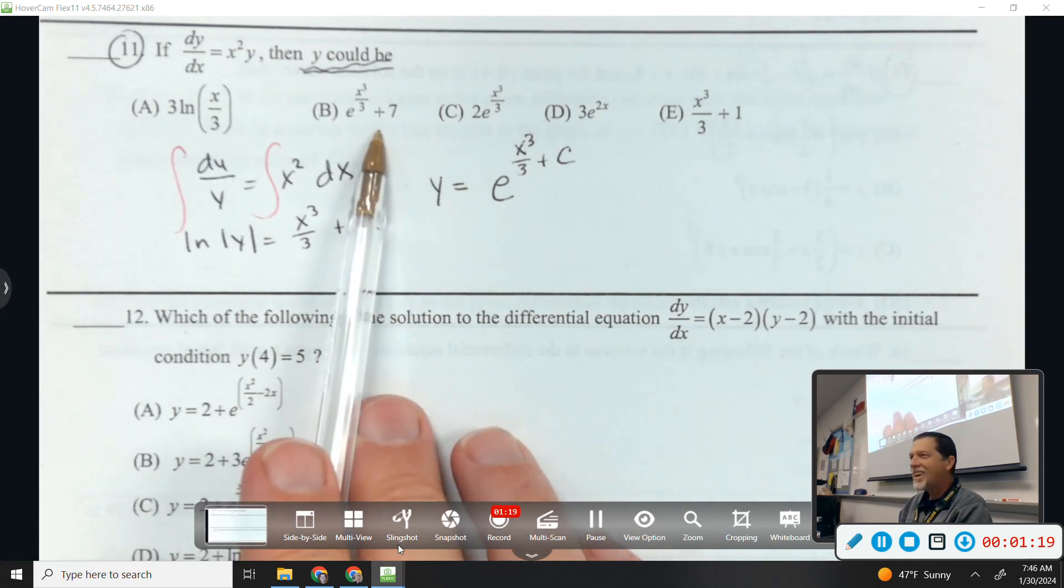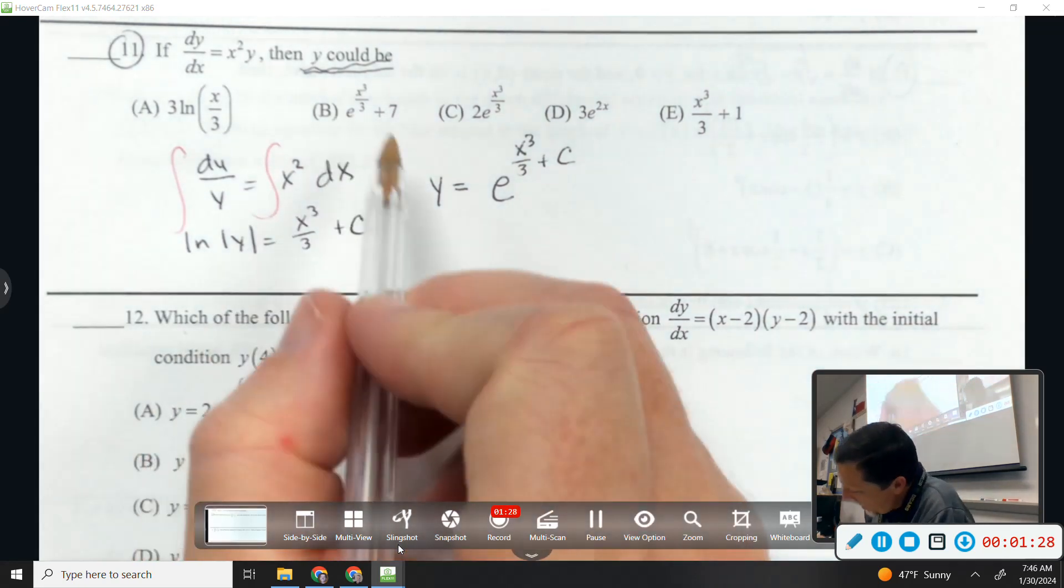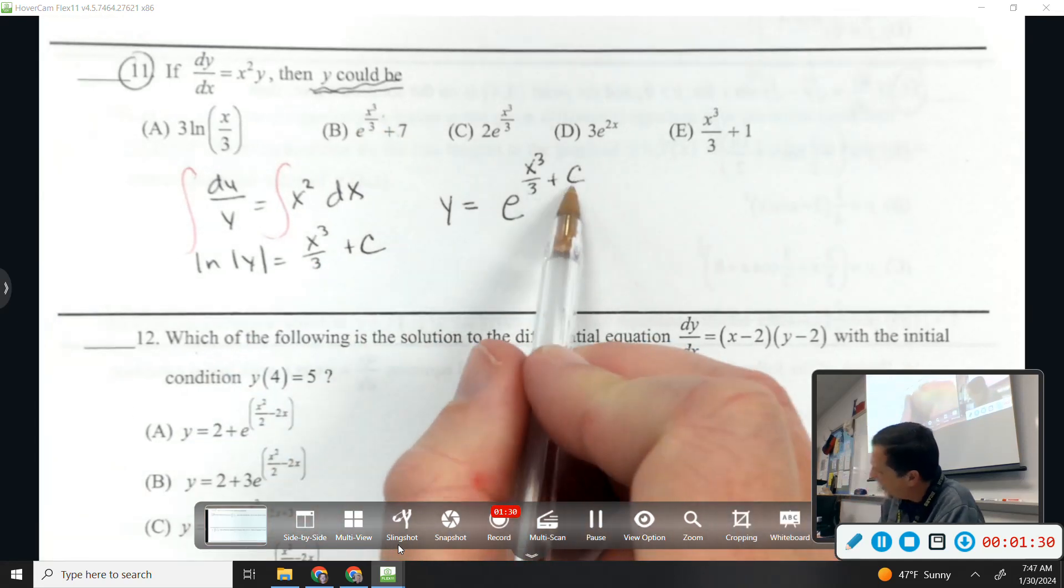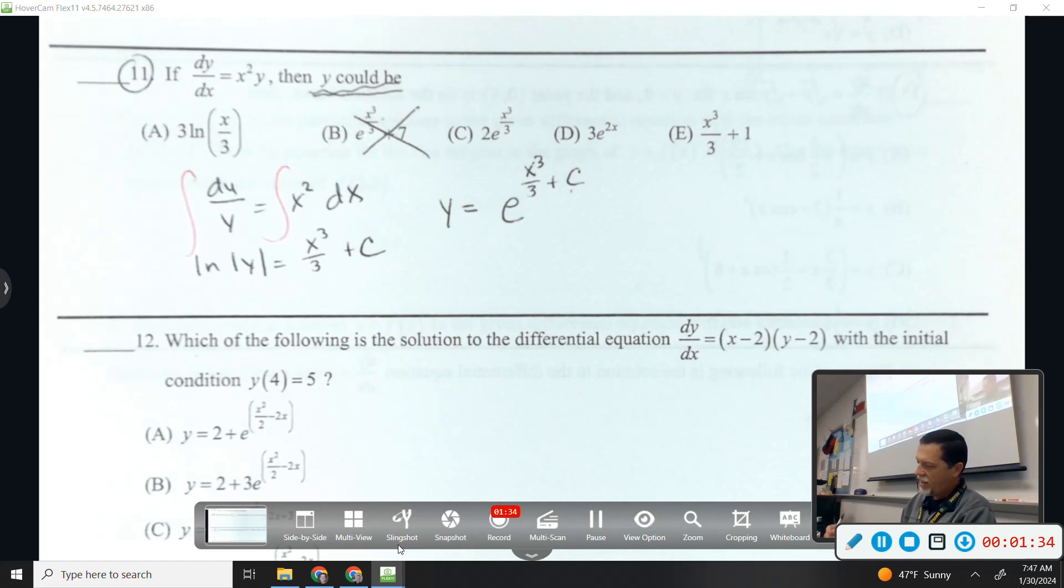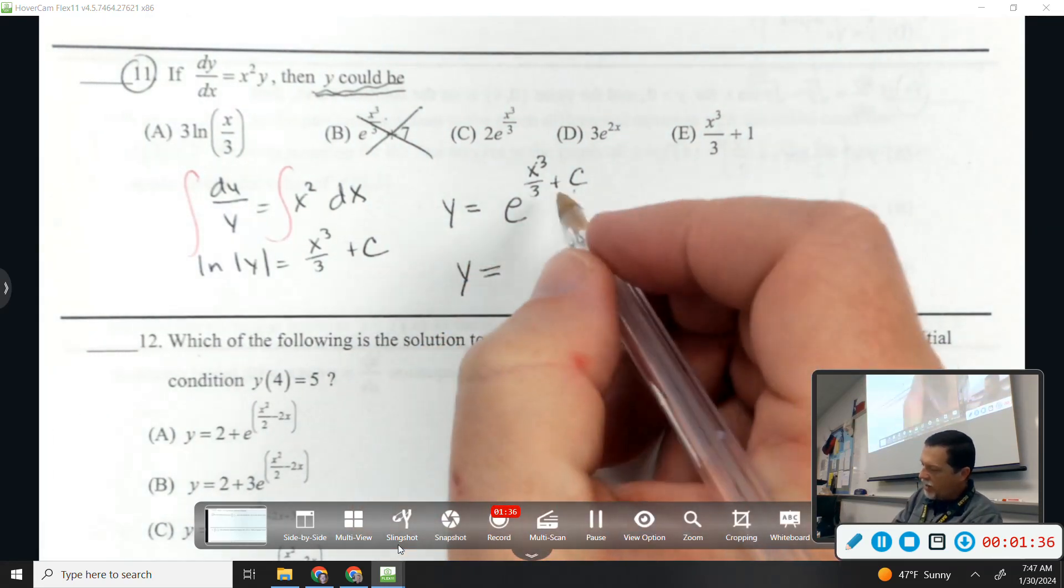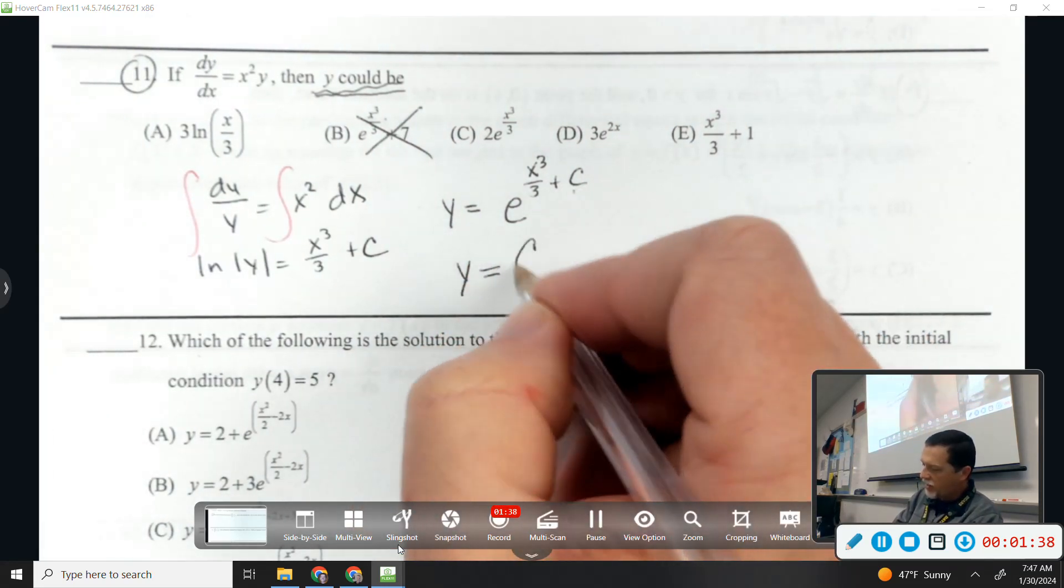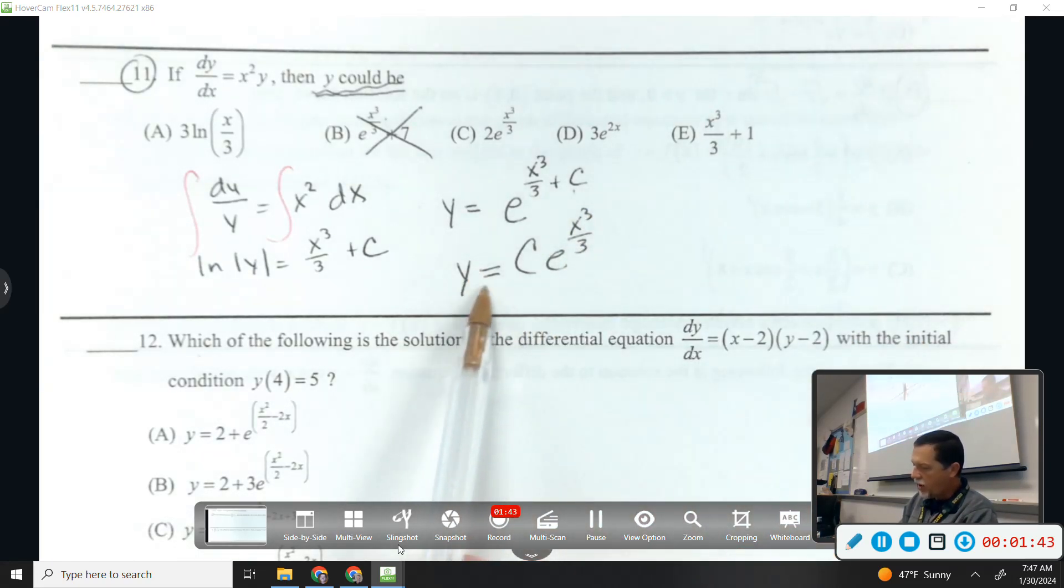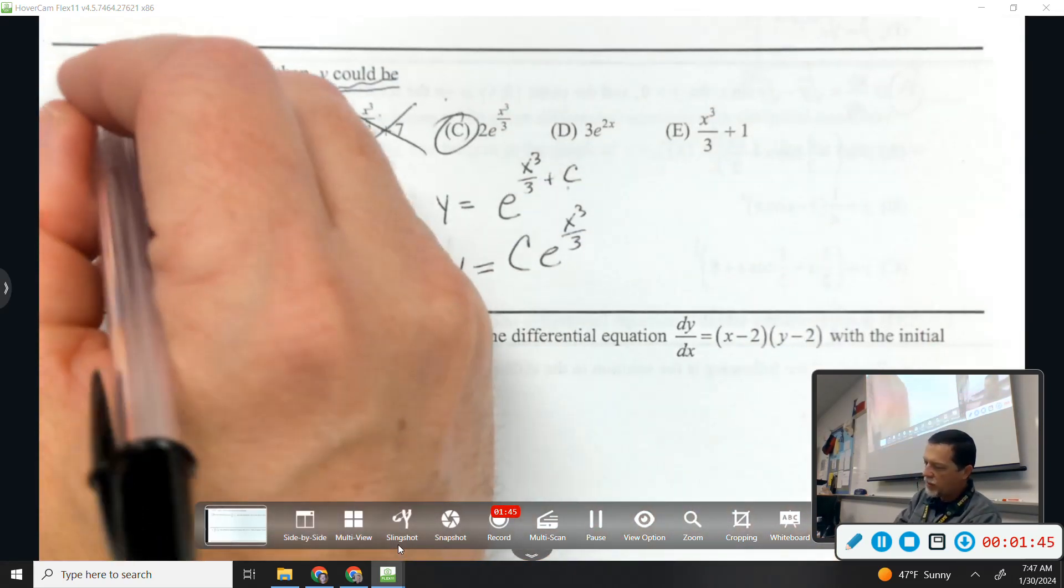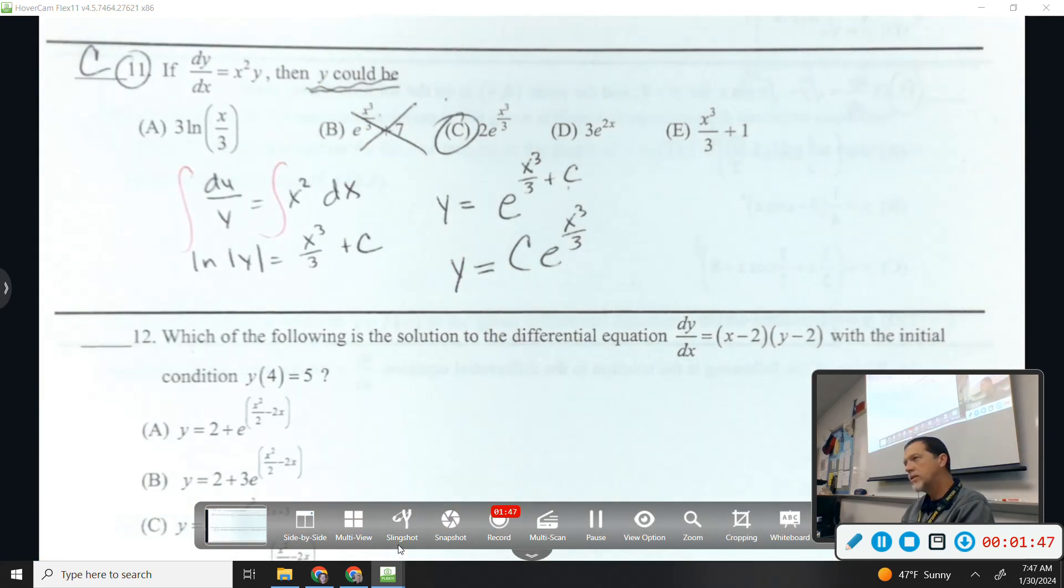Is it b? Why is it not b? That 7 is not in the exponent like it is here, so it's not b. This is where again we can make this c, e to the x cubed over 3, and now it looks like answer choice c, where c is 2.